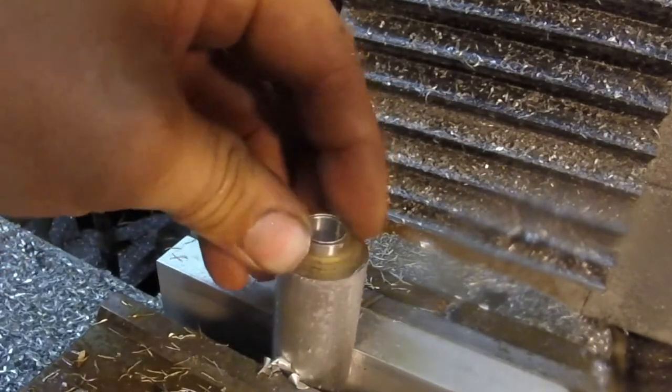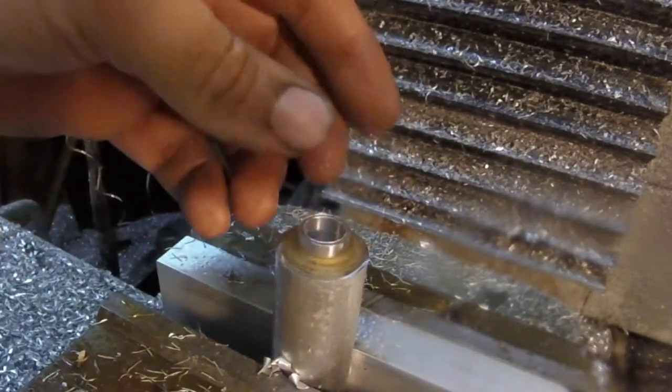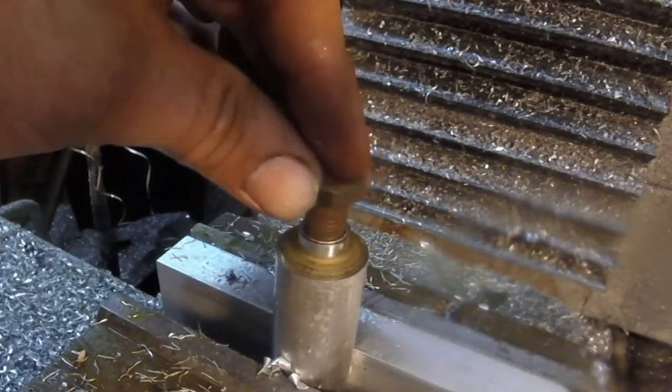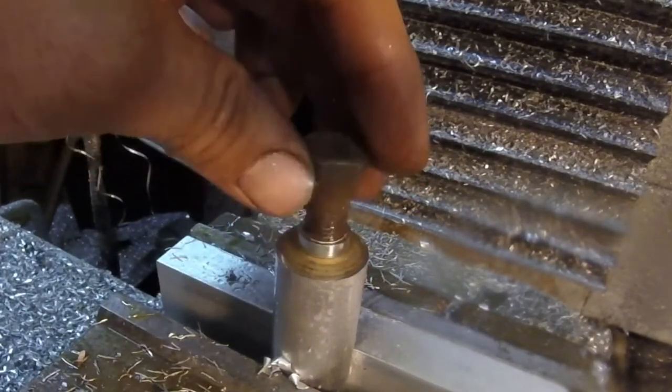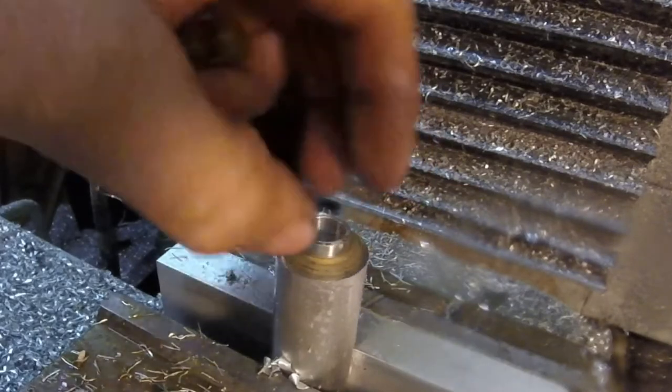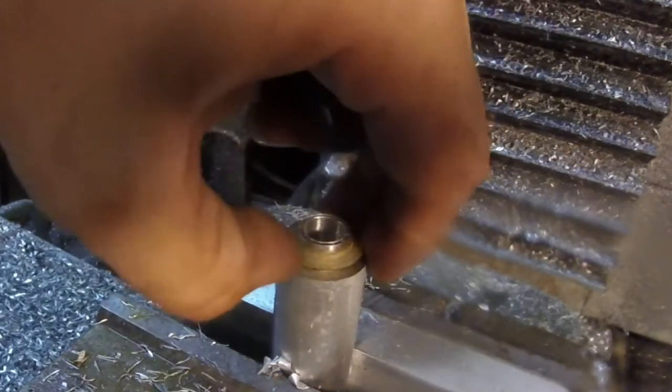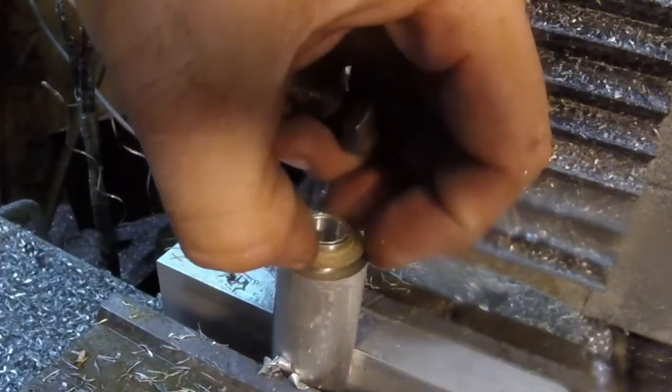That's the little plastic washer that fits on there and the bolt that goes through the center. Pretty good fit on both of those. So let's cut it off this parent stock and finish up the other side.